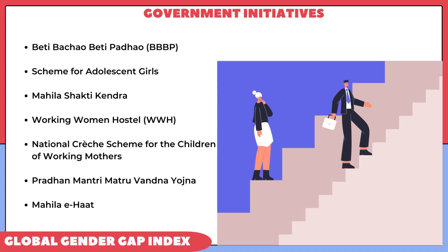You should also know the government's major initiatives to address gender gap. These include Beti Bachao Beti Padhao, Scheme for Adolescent Girls, Mahila Shakti Kendra, Working Women Hostel, National Scheme for Children of Working Mothers, Pradhan Mantri Matru Vandana Yojana, and Mahila E-Haat. These are some of the major initiatives the government has taken to reduce the gender gap in India.